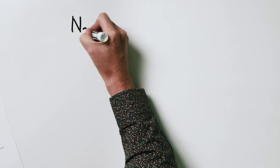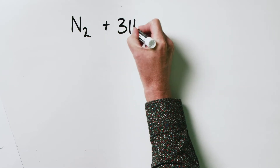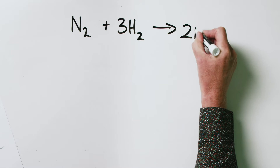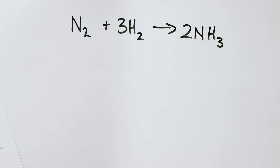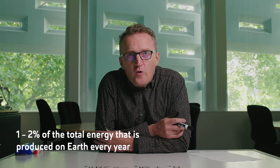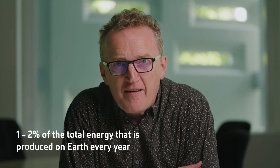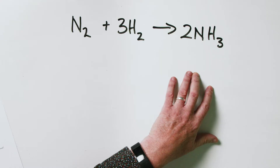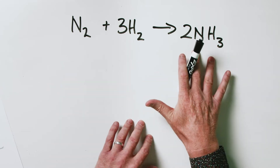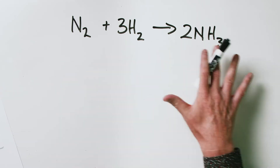Let's kick off by looking at an example of a balanced chemical equation — the production of ammonia from nitrogen and hydrogen. This particular chemical reaction actually takes up one to two percent of the total energy produced on planet Earth every year. Ammonia is used in fertilizer, which is why this reaction is so important.